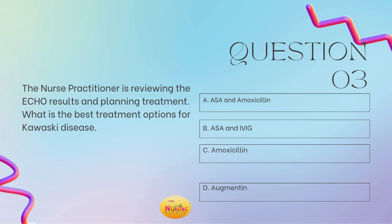And then lastly, question number three: the nurse practitioner is reviewing the echo results and planning treatment. What is the best treatment option for Kawasaki disease? Is it A, aspirin and amoxicillin; B, aspirin and IVIG; C, amoxicillin; or D, augmentin? Take a moment and tell me what you got, you guys.